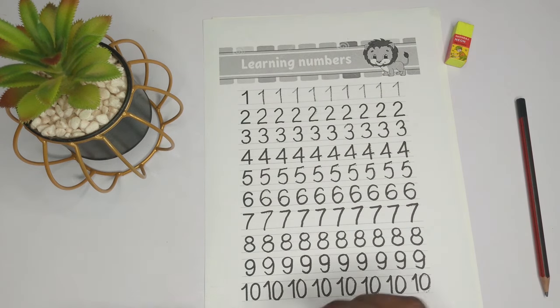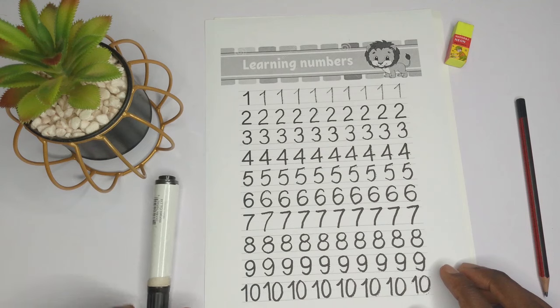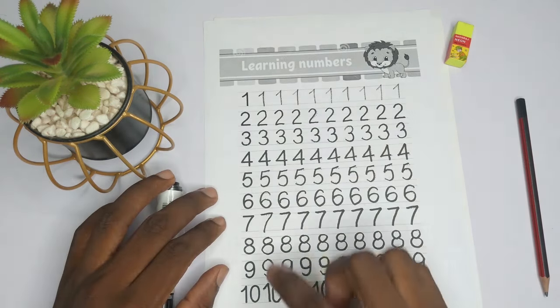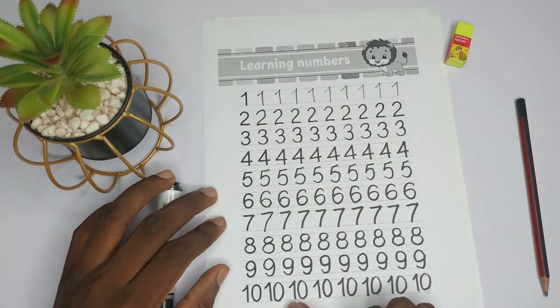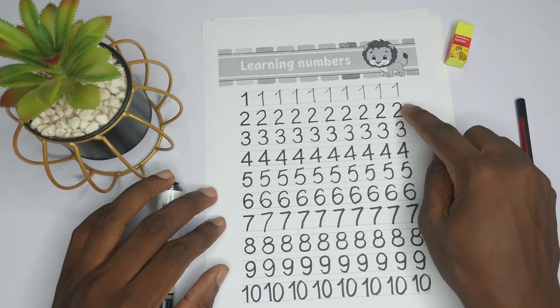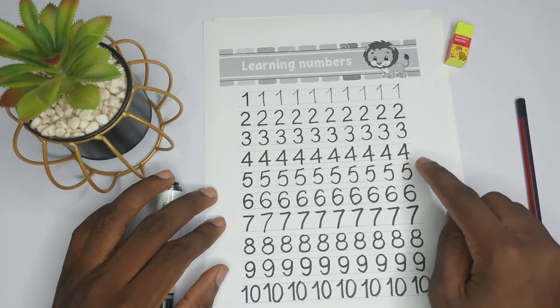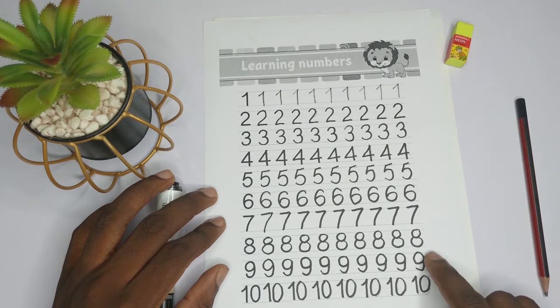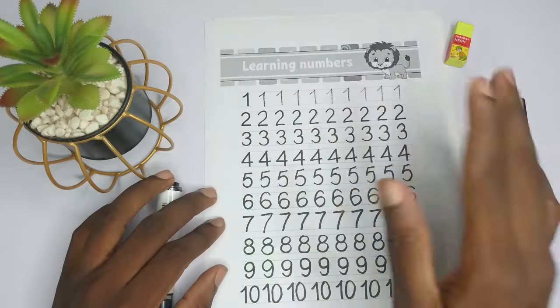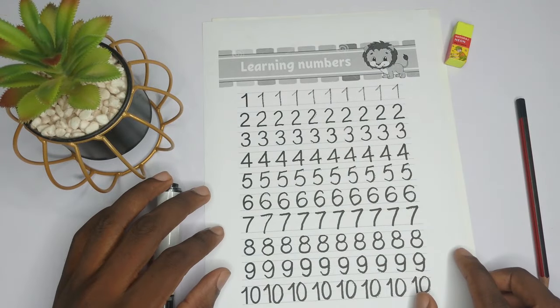Now you know how to write the numbers from one to ten, and you also know how to count them from one to ten. So we have one, two, three, four, five, six, seven, eight, nine, ten. So good job, bye bye, and I'll see you in the next video.